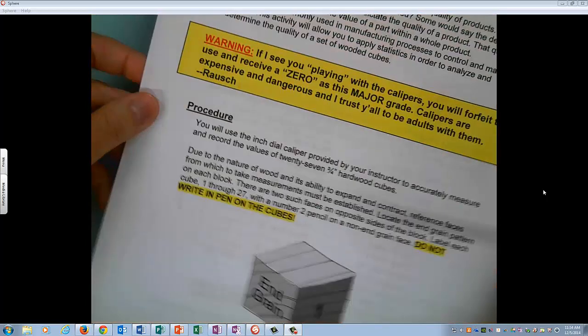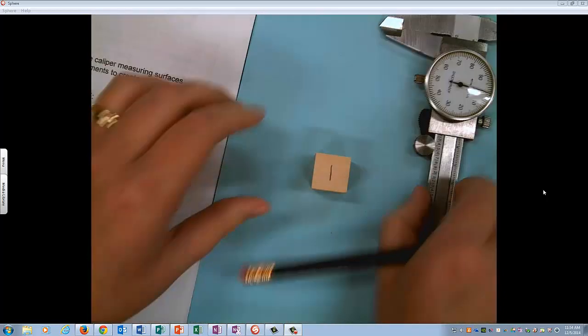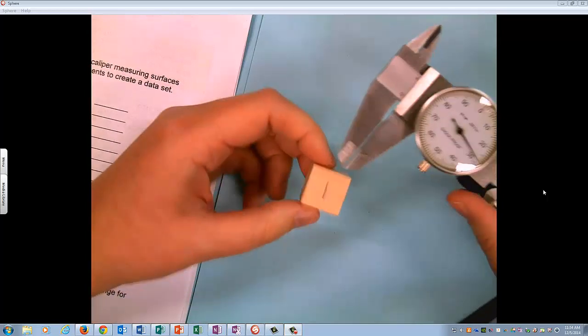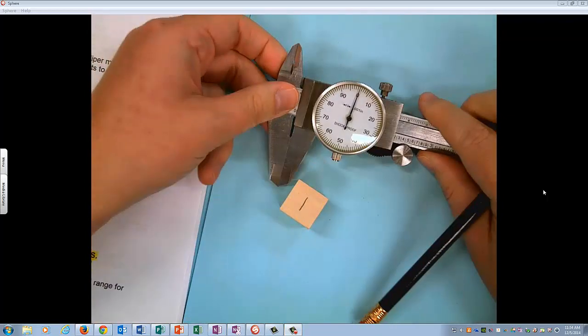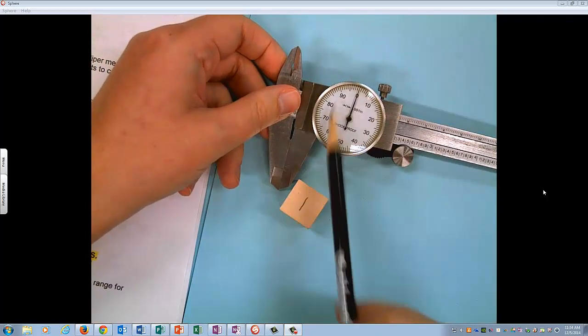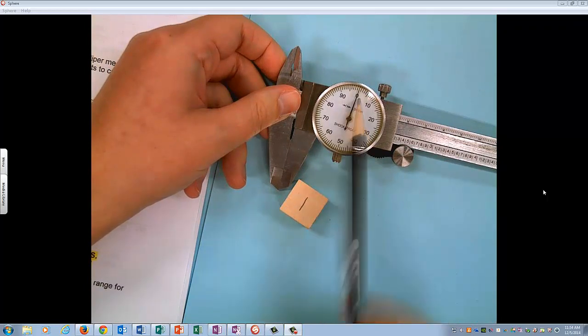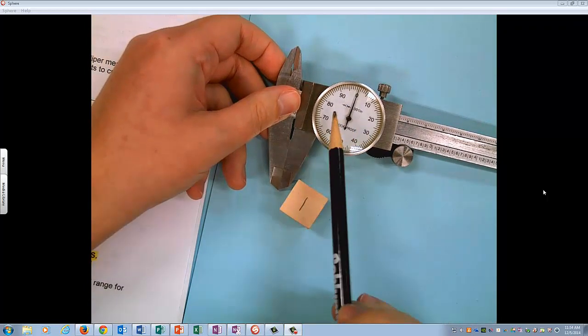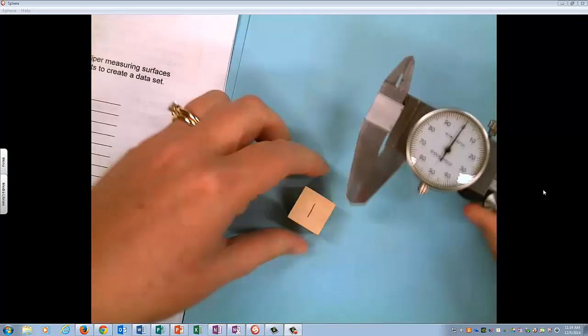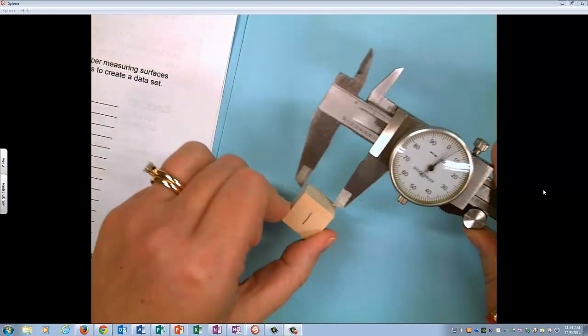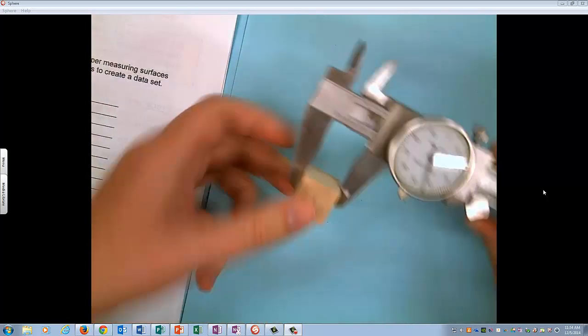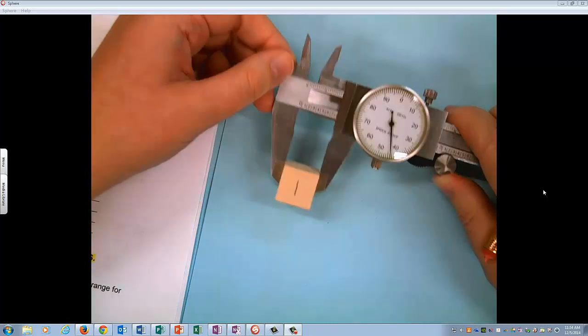And by the way if you would rather just read this I wrote it all out for you too. So I am going to measure wooden cube number one. One thing to remember guys, when you have a dial caliper if it does not sit on zero when closed please bring it to me and I will help you fix that. I am going to slide the cube in like that and we are going to measure.